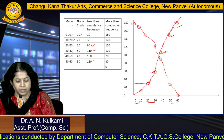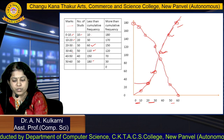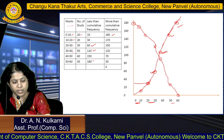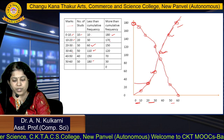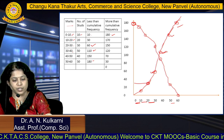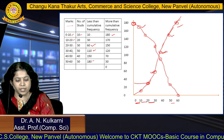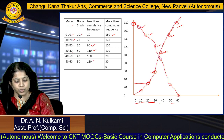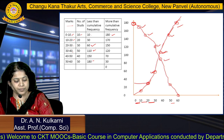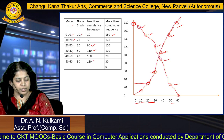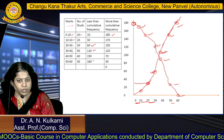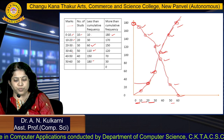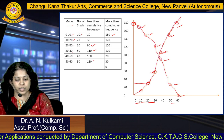Next, more than cumulative frequency. For the 0 to 10 class interval, the more than cumulative frequency is 180. For 10 to 20, it is 170. After that, 150, then 120, then 70, and last one is 30. The last class interval ends at 0. So this is the ogive curve for both less than cumulative frequency and more than cumulative frequency.